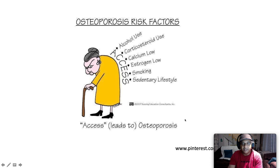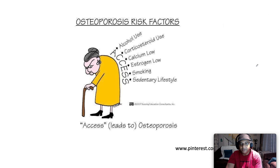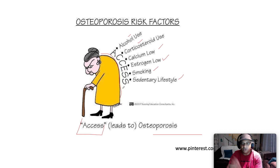Additional modifiable risk factors include alcoholism, impaired eyesight despite adequate correction, recurrent falls especially in the elderly, inadequate physical activity, and poor health and frailty. A helpful mnemonic: excess leads to osteoporosis — A is alcohol use, C is corticosteroid use, C is low calcium, E is low estrogen, S is smoking, incidentally lifestyle factors.